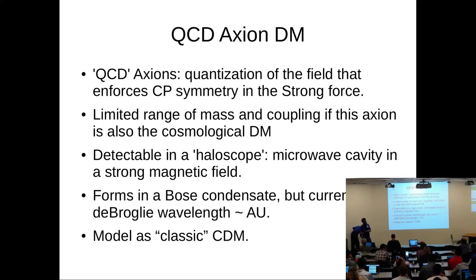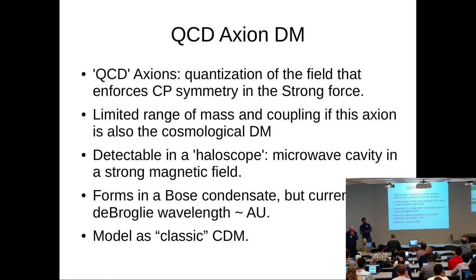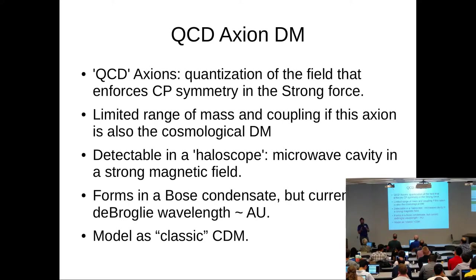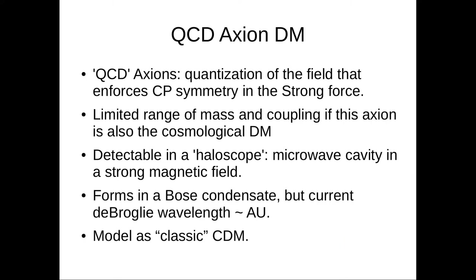The strong CP problem: the classic example is why doesn't the neutron, which is composed of three charged quarks, have an electric dipole moment? The strong force has this non-CP - that's charge parity - conserving term. What is causing the parameter in front of that term to be nearly zero? Peccei and Quinn - that's Helen Quinn -